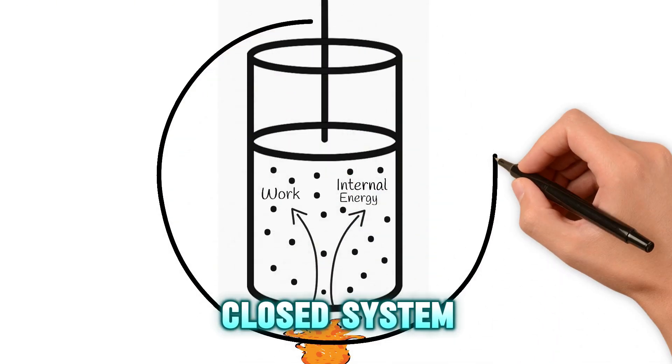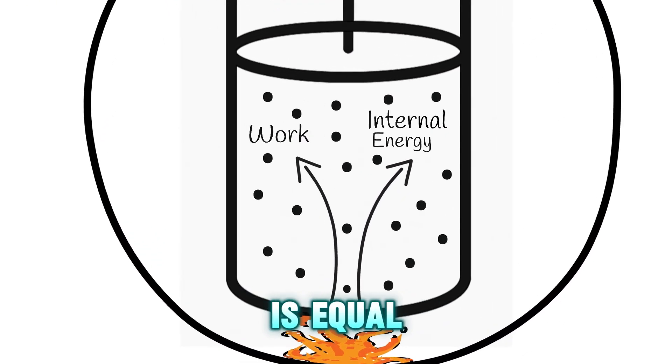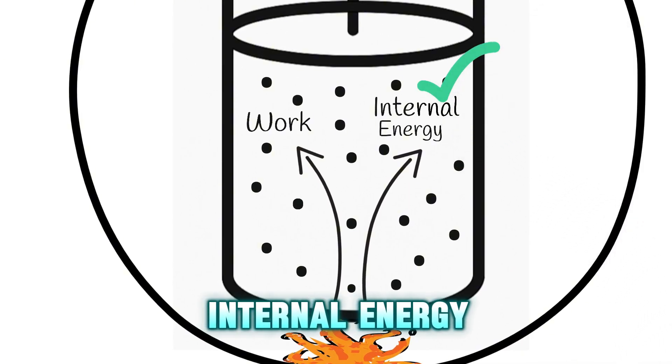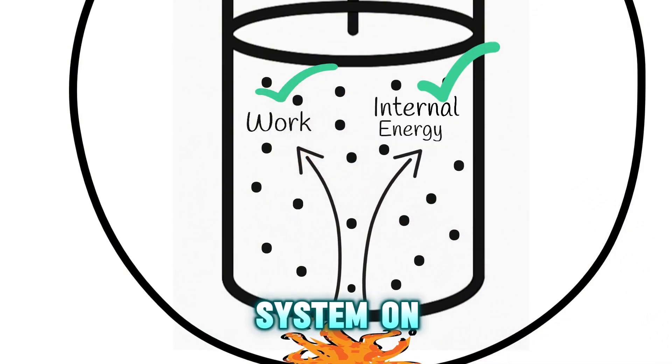In a closed system, the heat added to the system is equal to the increase in internal energy, plus the work done by the system on its surroundings.